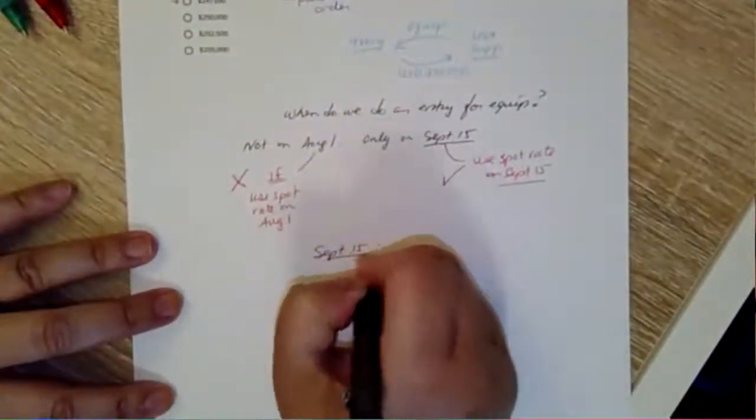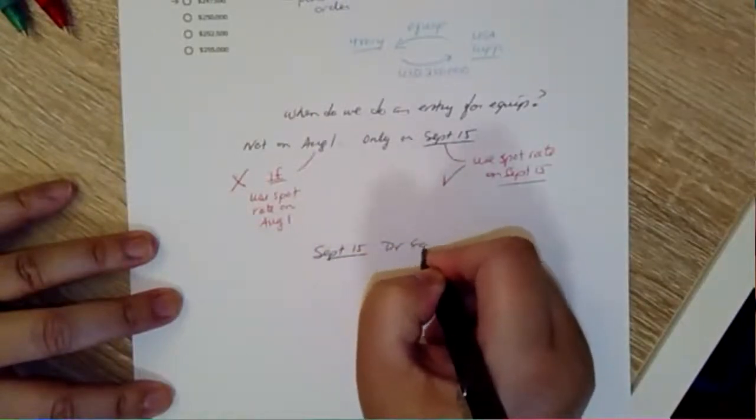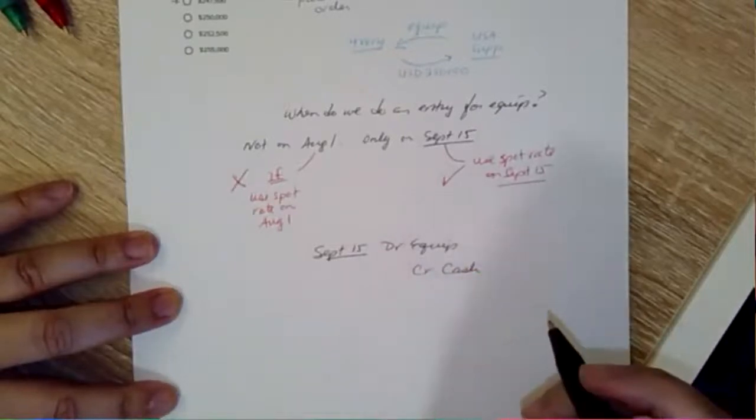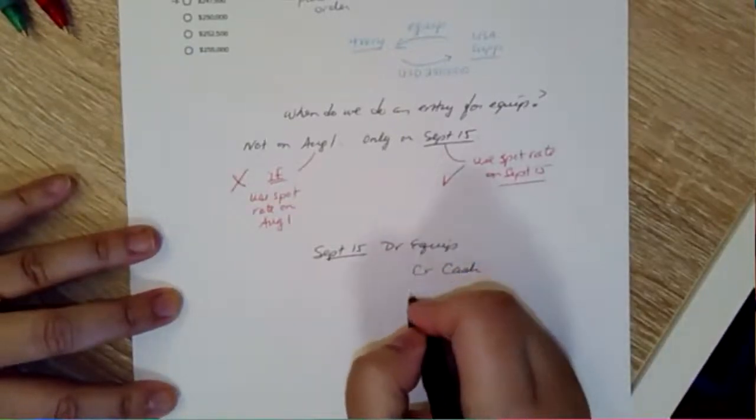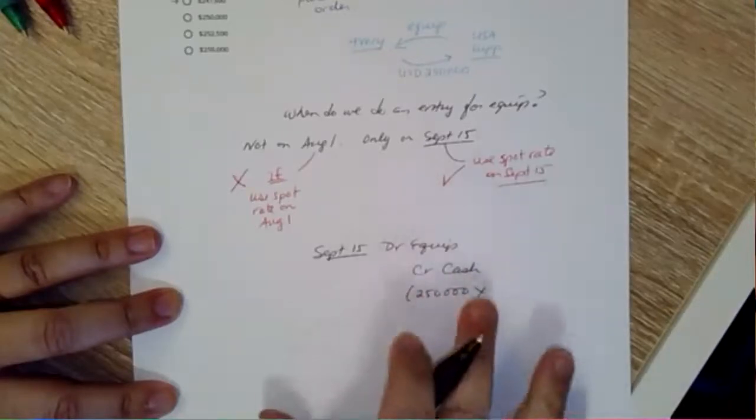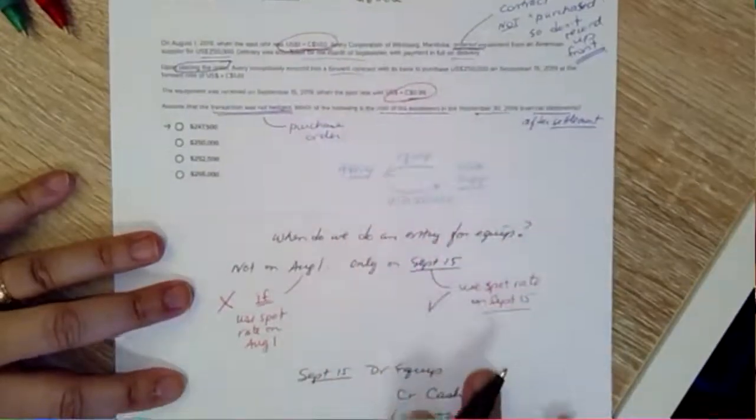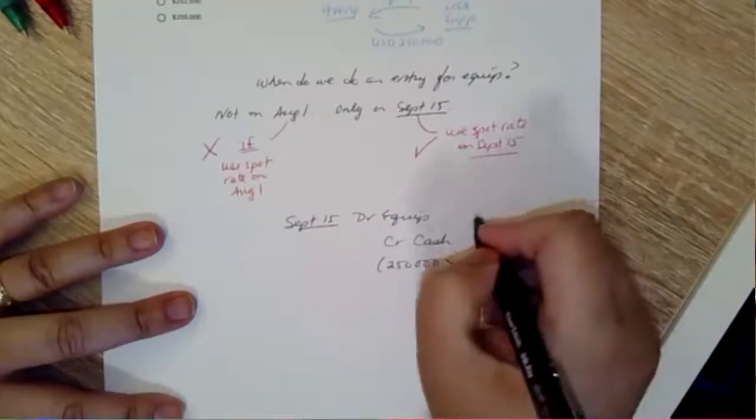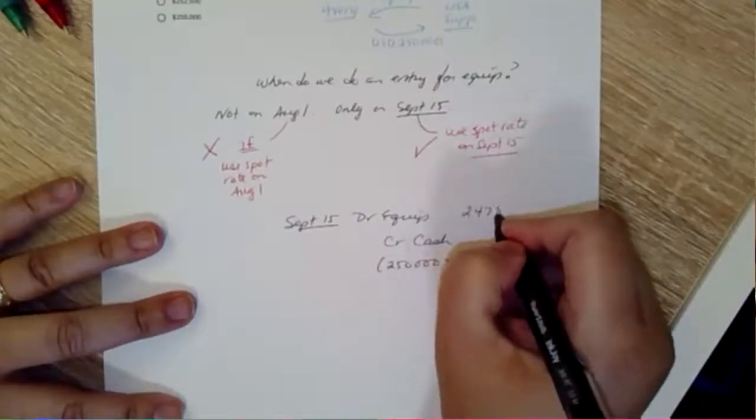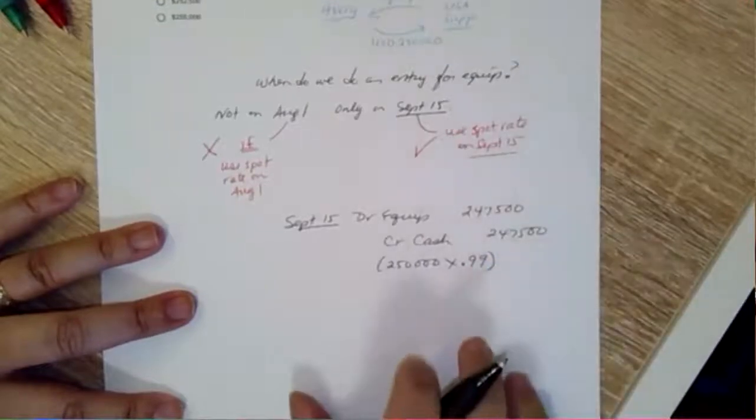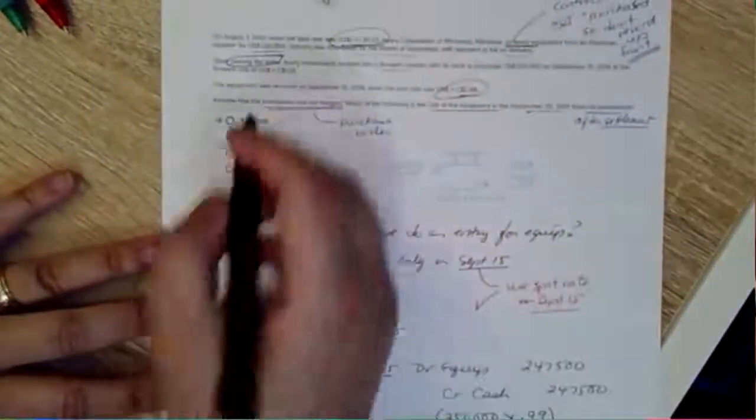September 15th, we debited equipment and credited cash, and that's $250,000 times, looking back up here, 0.99, is $247,500, which is indeed our answer up here.